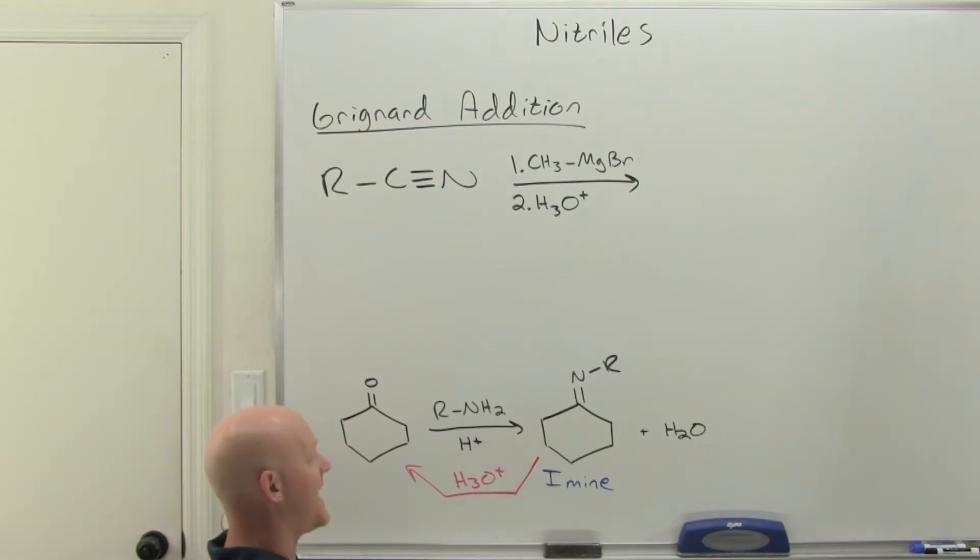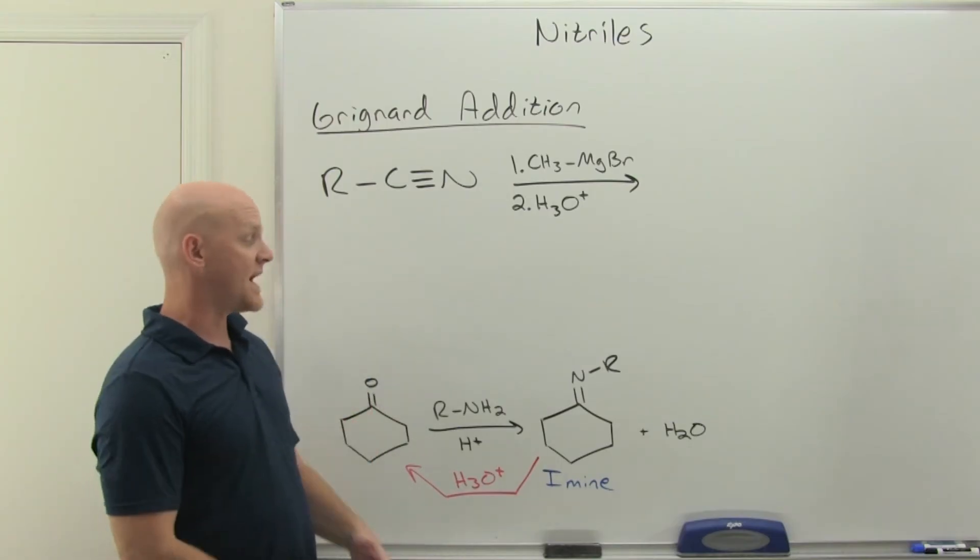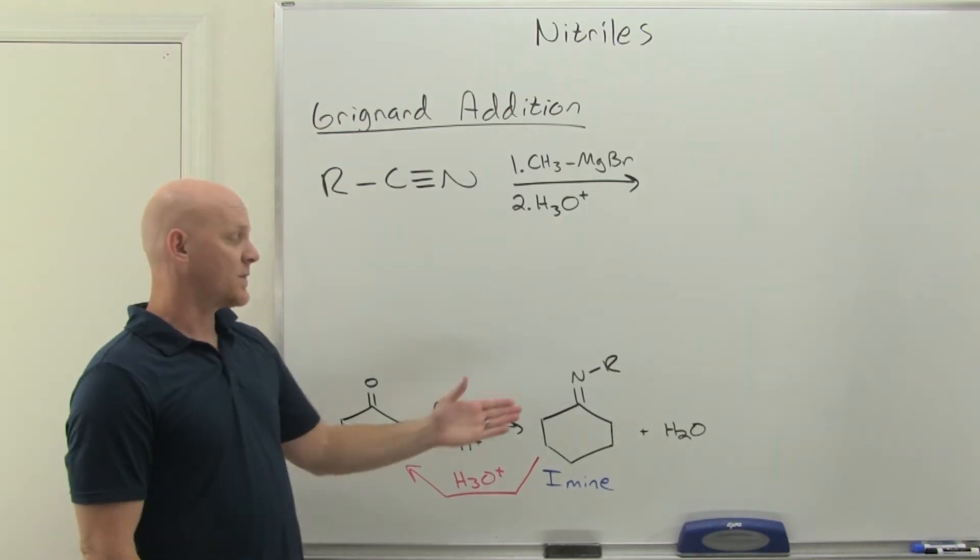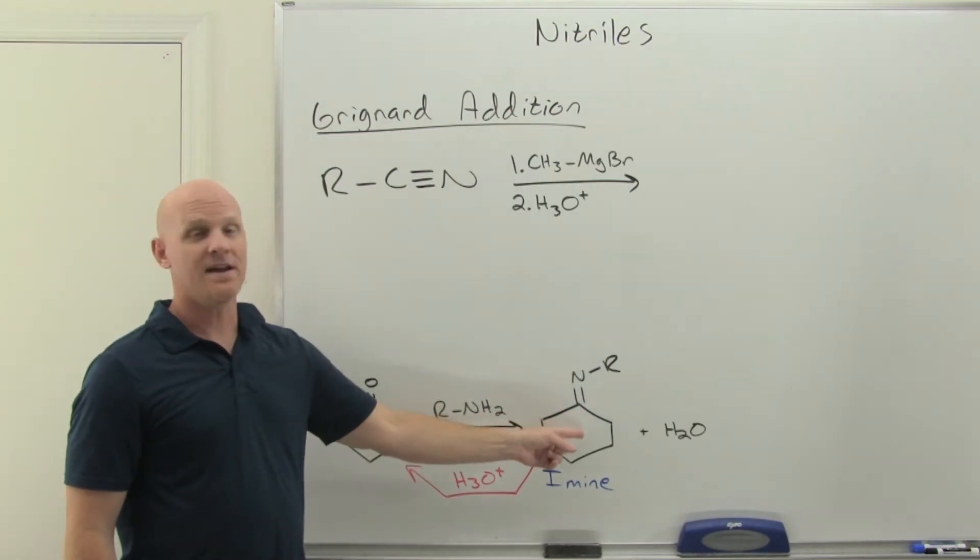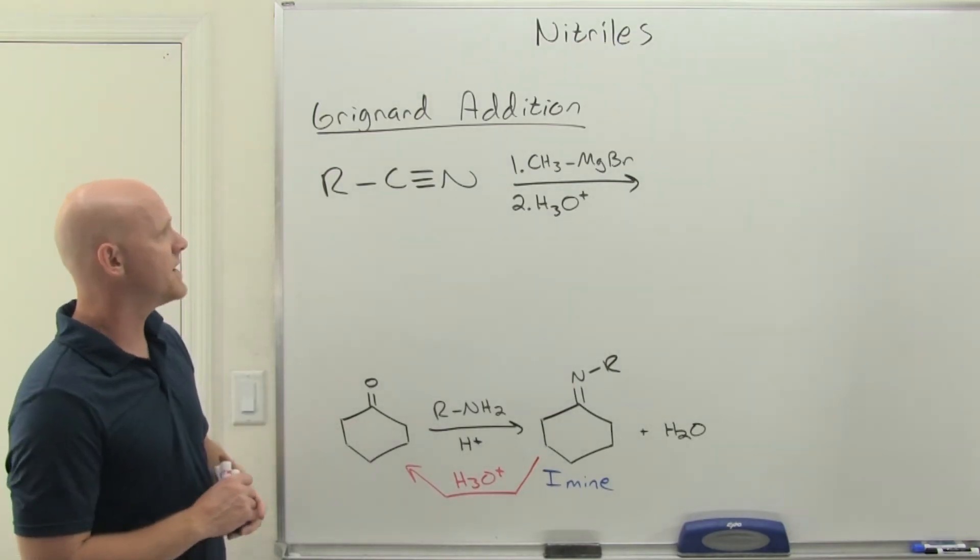It turns out that hydrolysis reaction is going to be important here because one of the intermediates we're going to form in this reaction is an imine with the Grignard addition to a nitrile. We're going to form it under acidic conditions, which is why that imine is going to end up getting converted to a ketone, which will be the functional group in our final product.